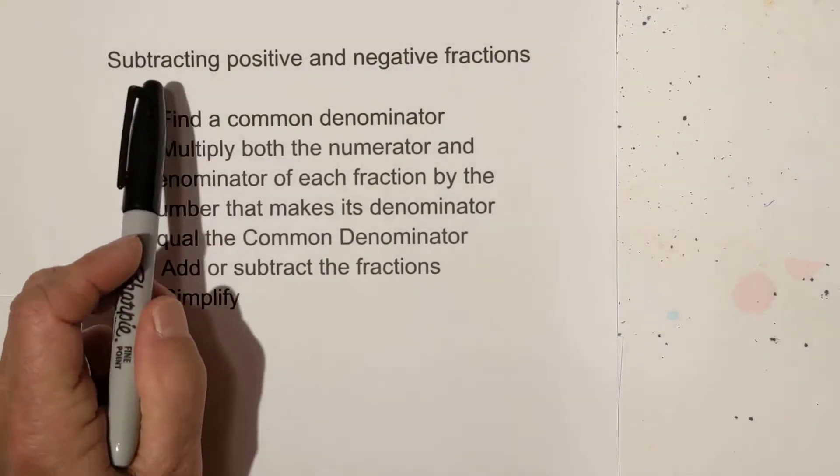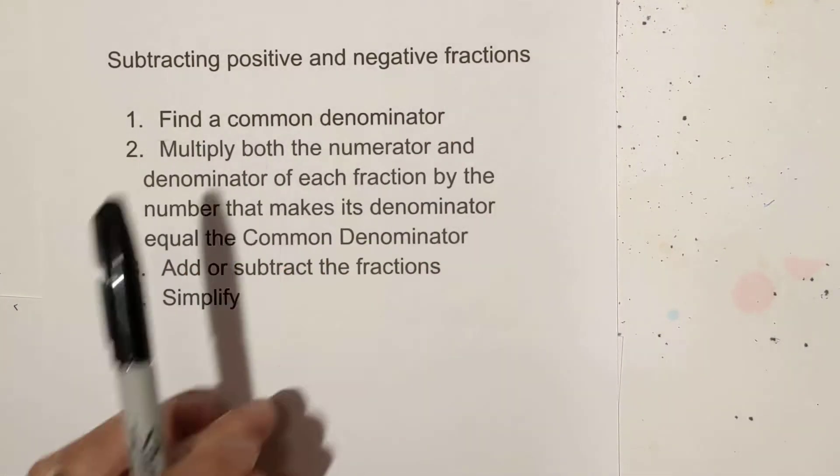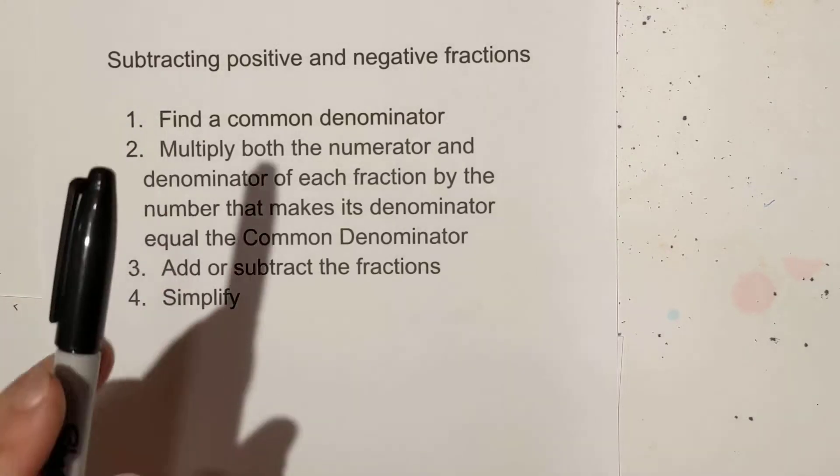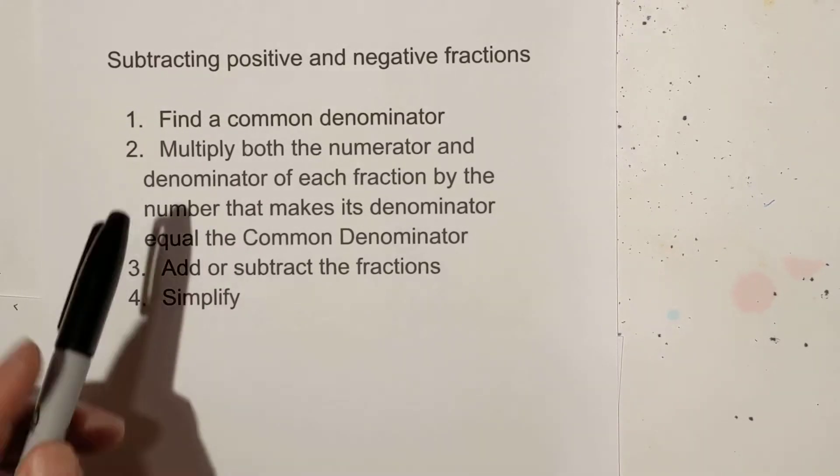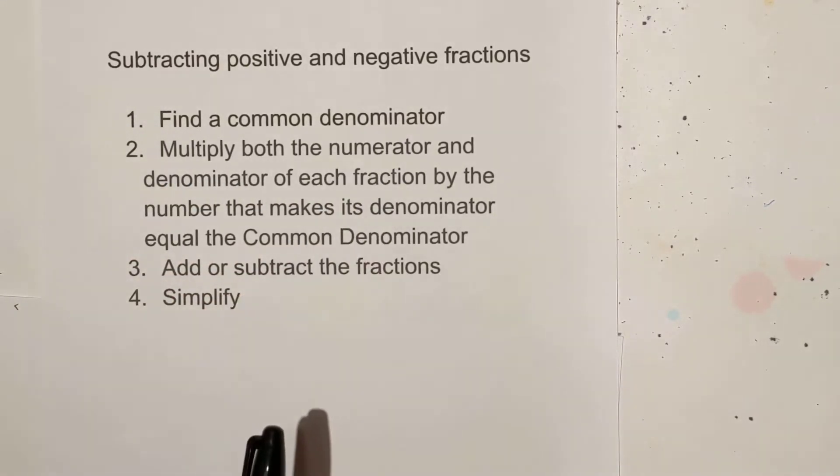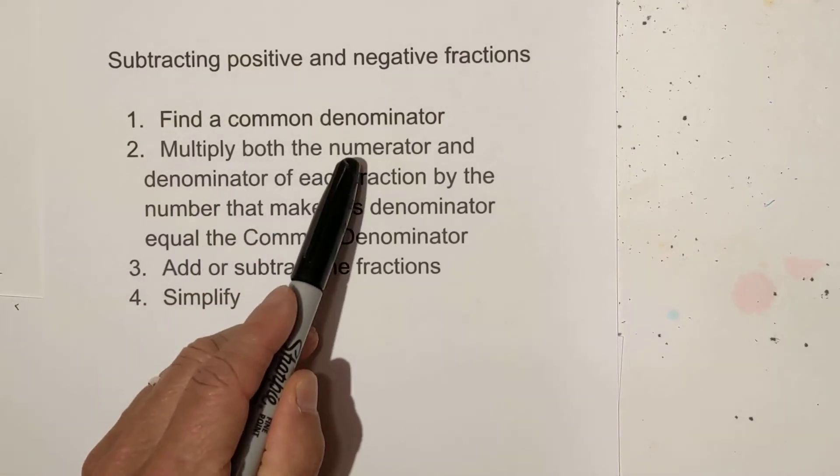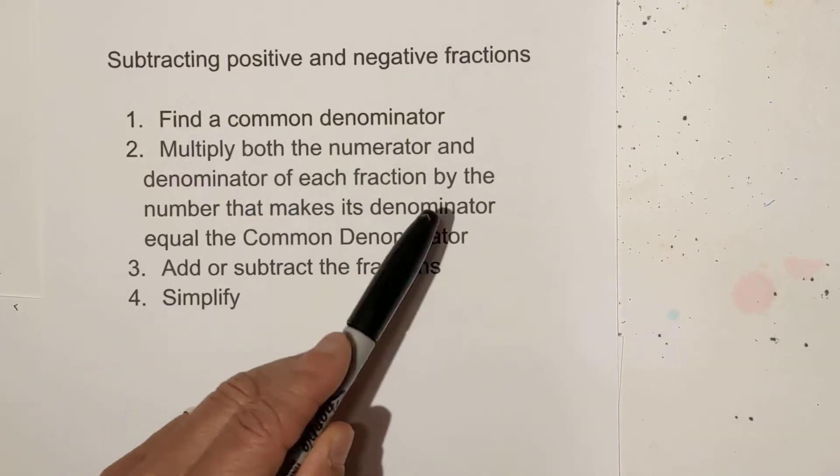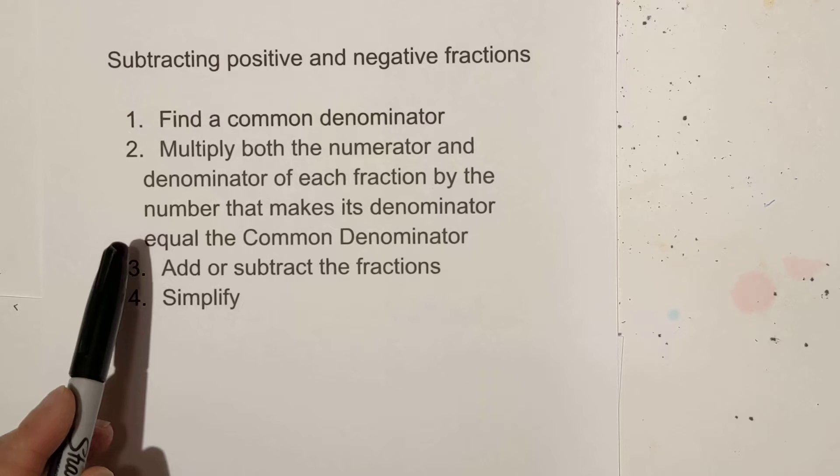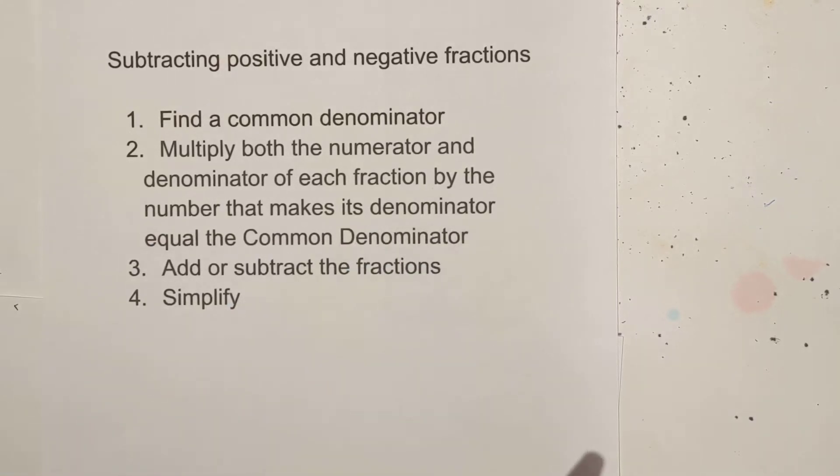Welcome to Moomoo Math and Science. In this video we are going to work on subtracting positive and negative fractions. They all have an uncommon denominator so we are going to find a common denominator. Then we are going to multiply both the numerator and the denominator of each fraction by the number that makes its denominator equal to the common denominator. Then we are going to add or subtract the fractions and simplify. So let's get started.